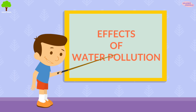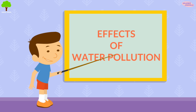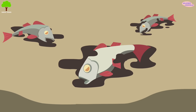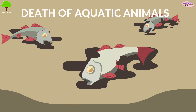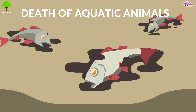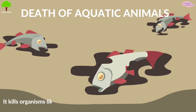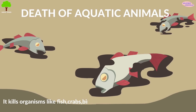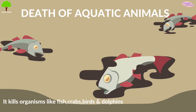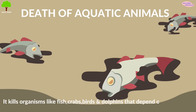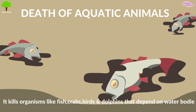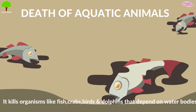Let's see some effects of water pollution. Death of aquatic animals. It kills organisms like fish, crabs, birds, and dolphins that depend on these water bodies.